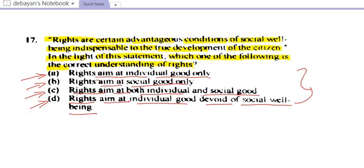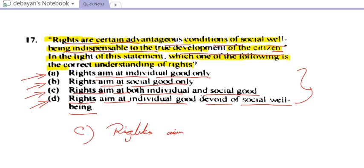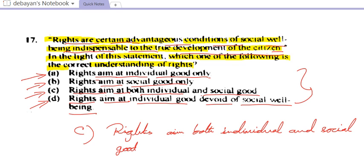From the passage, rights are certain advantageous conditions of social well-being, indispensable to the true development of the citizen. We can see that option C, which says rights aimed at both individual and social good, is the correct one. So the correct answer is option C.